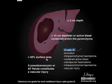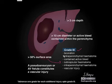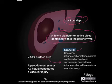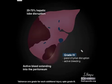Now for grade 3, the subcapsular hematoma is more than 50% surface area. The intraparenchymal hematoma is more than 10 centimeters in diameter, or there can be active bleeding within the parenchyma. The laceration is more than 3 centimeters in depth, and there may be presence of vascular injury — meaning a pseudoaneurysm or AV fistula.